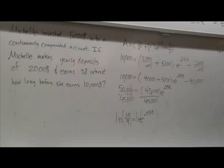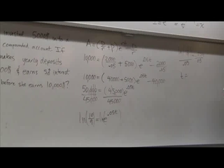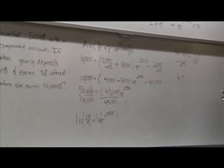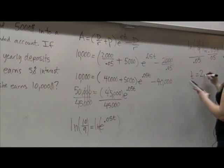I'm going to divide by 0.05. So t is equal to what? Did I do too many steps? Great. I'm just going to put that in my calculator. Clear. ln of 10 ninths divided by 0.05. 2.107 years.